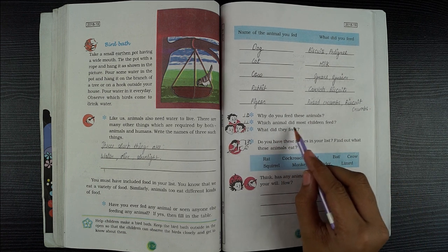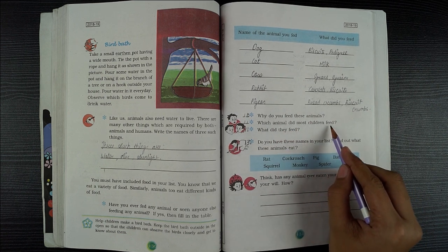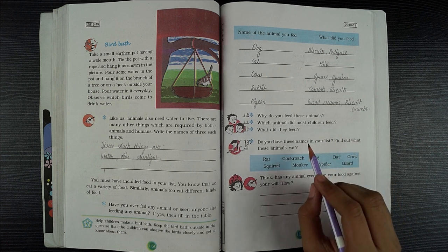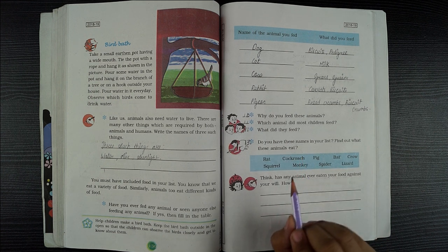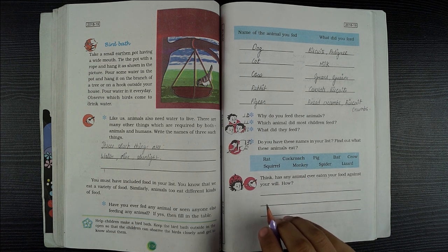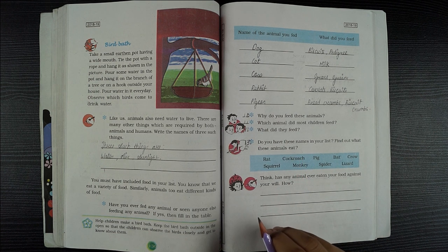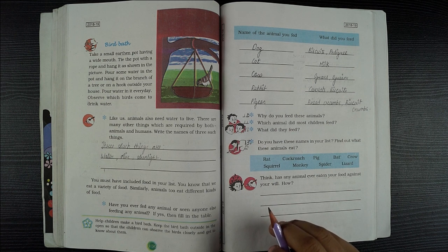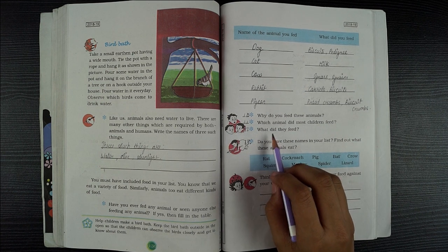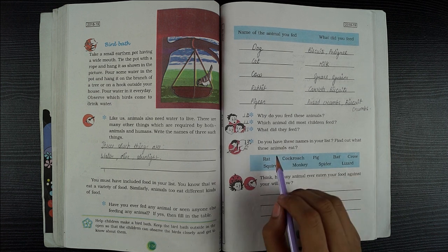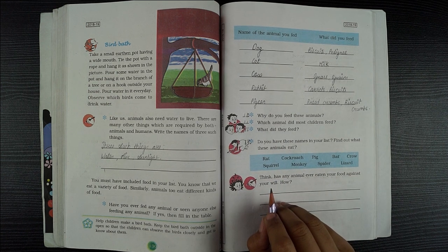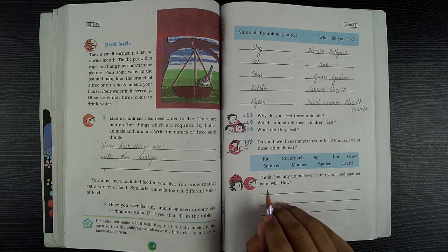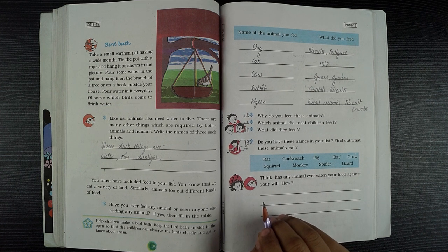Which animal did most children feed? Most of the children fed dogs. What did they feed? They fed pedigree, meat, and biscuits.